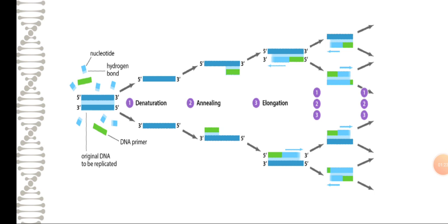In PCR, the original DNA to be replicated is separated by denaturation. The next step is annealing, where hydrogen bonds and nucleotides bind. This bound nucleotide is then elongated in the method of extension. Through elongation, many copies of DNA can be formed. These previous steps are repeated to make many copies of DNA. The next method is cloning.